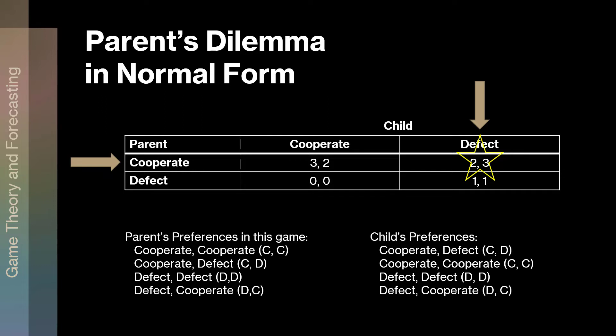Notice in this game there is no Pareto superior outcome to that cooperate/defect result — there is no outcome that both players prefer to it. And therefore, repeated play and a lot of the things that make a prisoner's dilemma juicy for analysis are totally absent here, because it's simply not a prisoner's dilemma. By changing the preferences, we're looking at a different game — that's all we're doing.